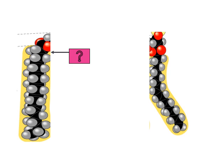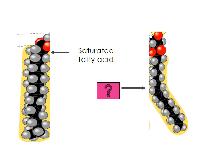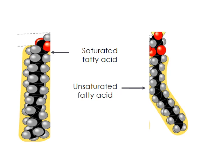Here is an image of a fatty acid — let's try to identify it. We see that everything has one line coming out of it, so basically it's a saturated fatty acid. The unsaturated fatty acid is responsible for making a bend in the chain because it has double bonds.